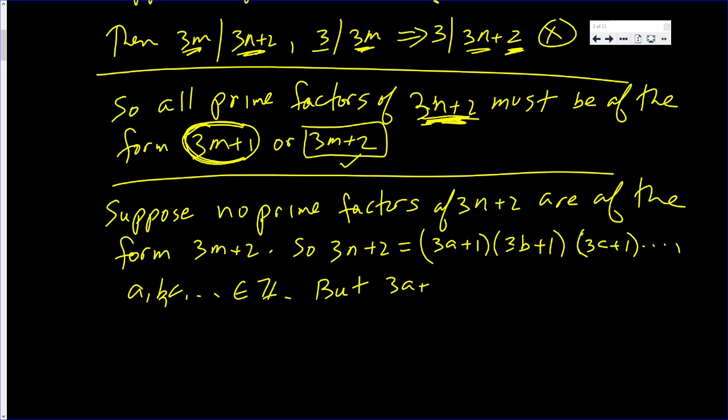But 3a plus 1 times 3b plus 1, et cetera, is of the form 3q plus 1. Because any time you multiply two things, you're going to take one from each. Every time you do that, with one exception, when you pick one from each, at least one of them is going to be of the form 3a, a multiple of 3. Except when you multiply all the ones together.